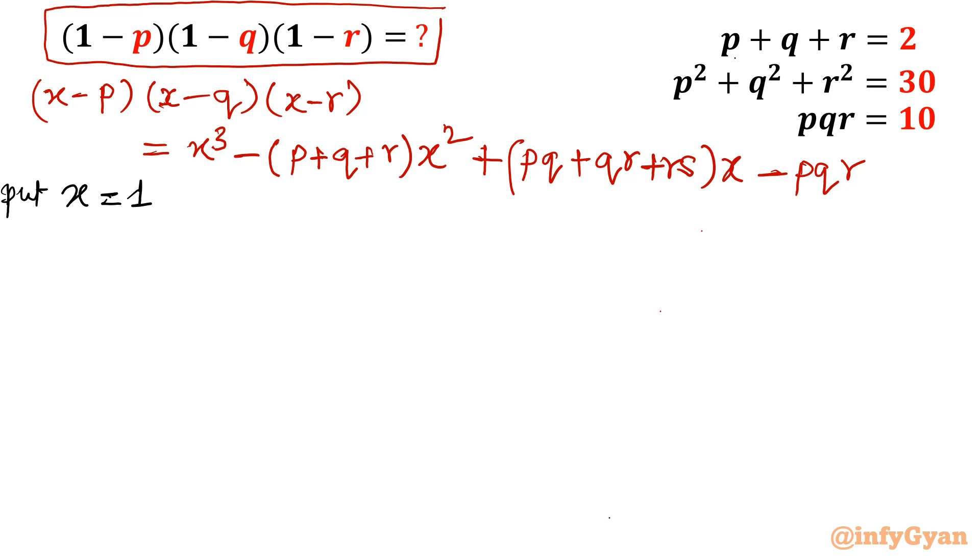So equation will be (1-p)(1-q)(1-r). Now put x equal to 1 in the right hand side also. 1 cube minus (p+q+r) times 1 square plus (pq+qr+rs) times 1 minus pqr.